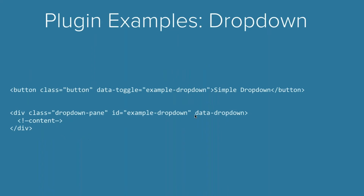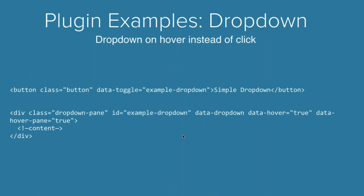Basic use looks something like this. You have something toggling it, and the thing that is the dropdown labeled with data-dropdown. The toggle is going to point to an ID, just like everything else we've been saying.